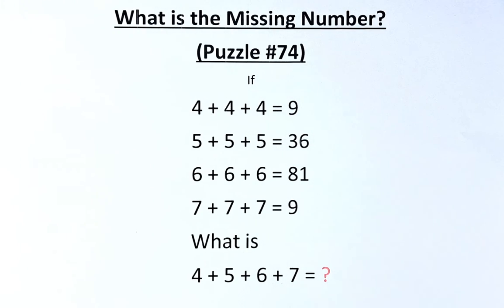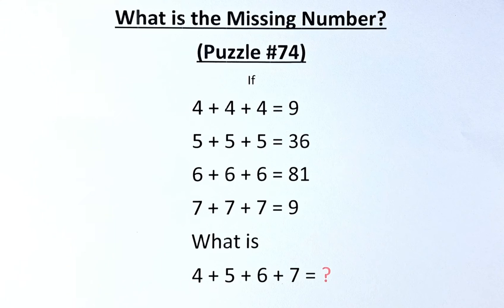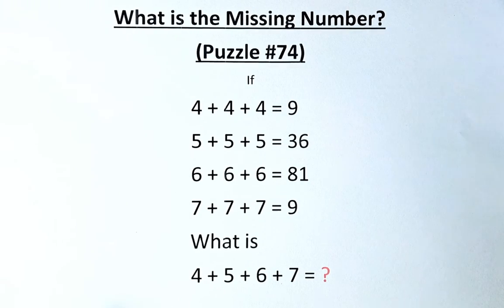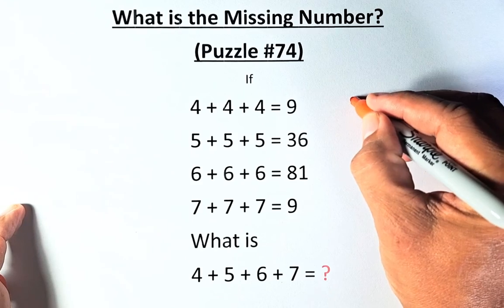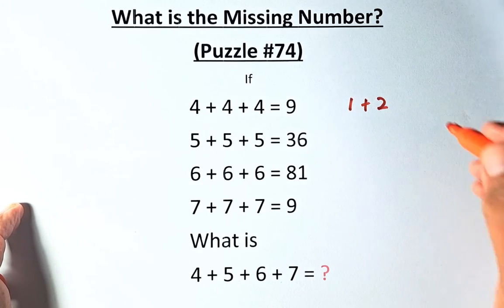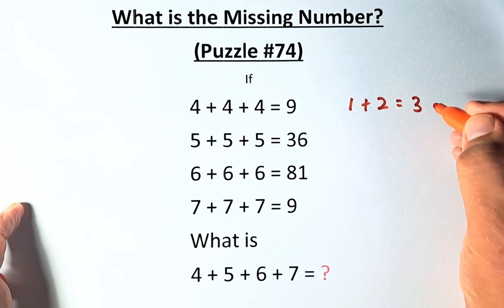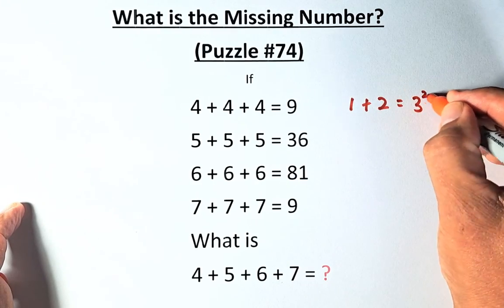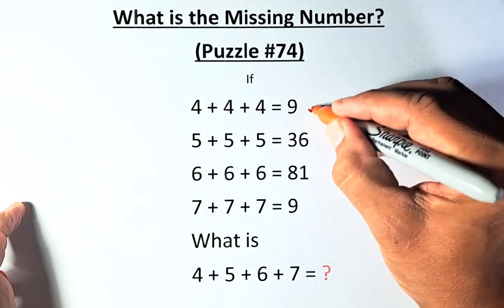Now we are going to solve. If you have solved this, well done. If not, this will be the solution. So if you look at 4 plus 4 plus 4 equals to 9, it's actually 4 plus 4 plus 4 equals to 12. What you're going to write is 12, and then we are going to add 1 plus 2, and the answer is 3. And this 9 is just the square of 3 squared, and that is how you get 9.